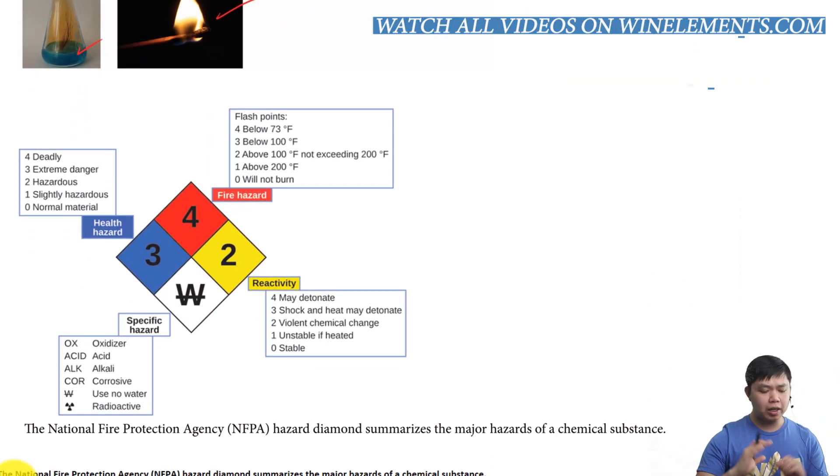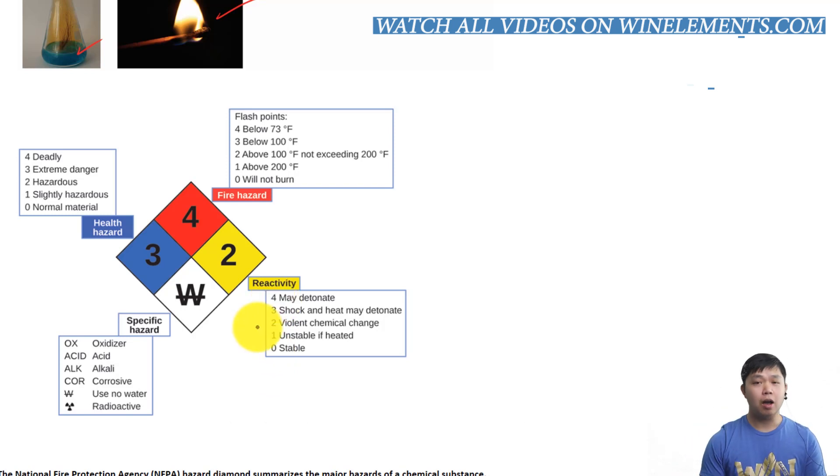And here is a very good example of why we need to understand chemical properties. The NFPA, which is National Fire Protection Agency, they have this hazard diamond that summarizes the major hazards of chemicals. If we look at this in terms of level, it's from 0 to 4. 0 is safe. 4 is get the heck out of there, because, or just be careful, because it's super dangerous.